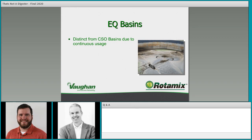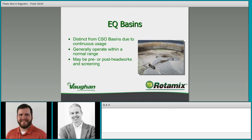EQ basins are distinct from CSO basins due to their continuous usage. They generally operate within a normal range, equalizing flow into a facility. They may be pre- or post-headworks and screening — you might have completely unscreened, unmitigated waste flow coming into the EQ basin and then being metered into the facility, especially if headworks is the flow-limiting factor driving the need for the EQ basin.